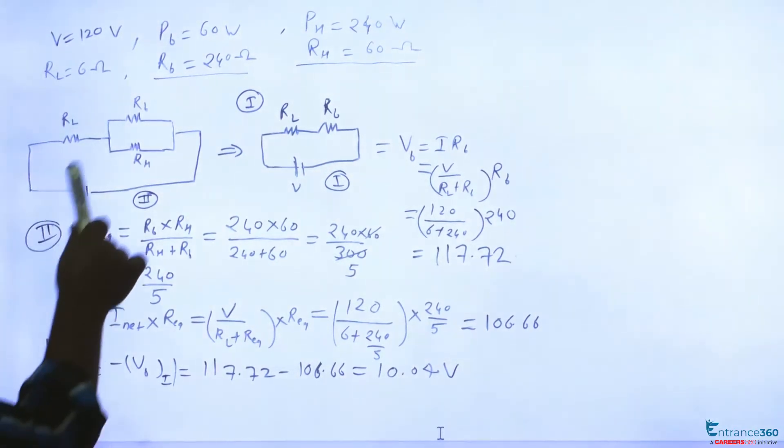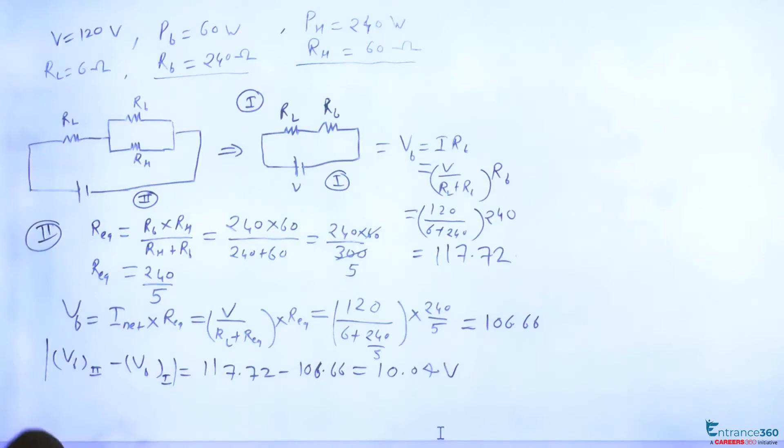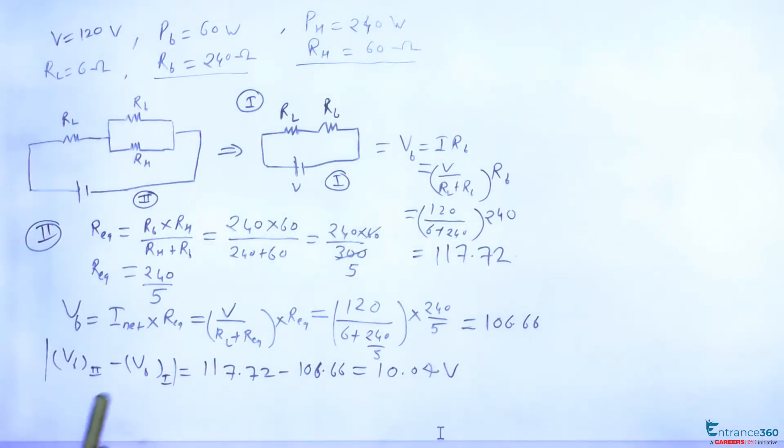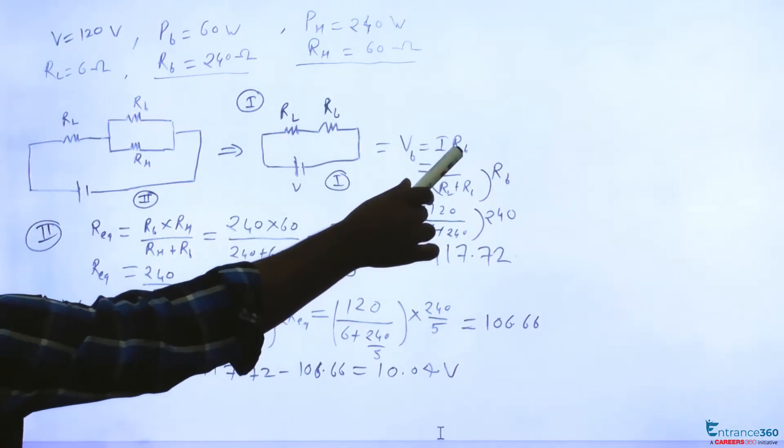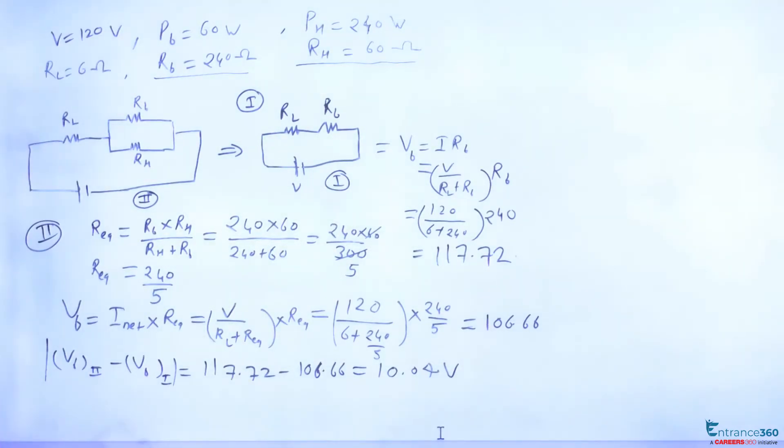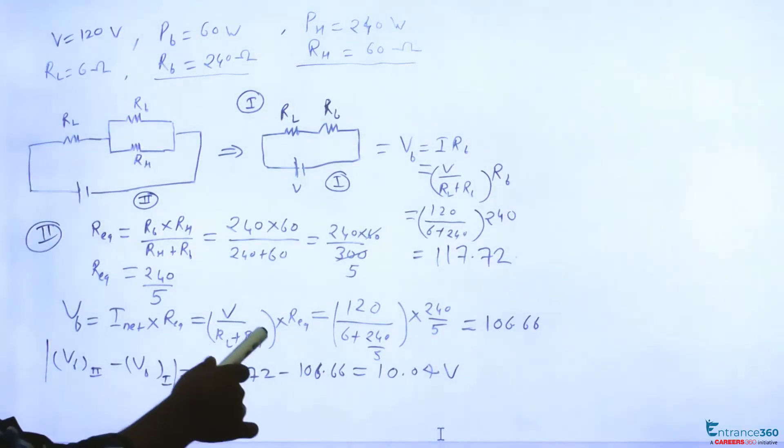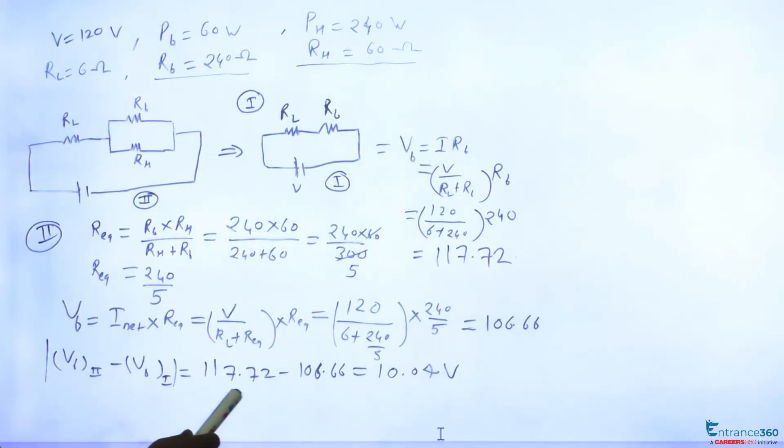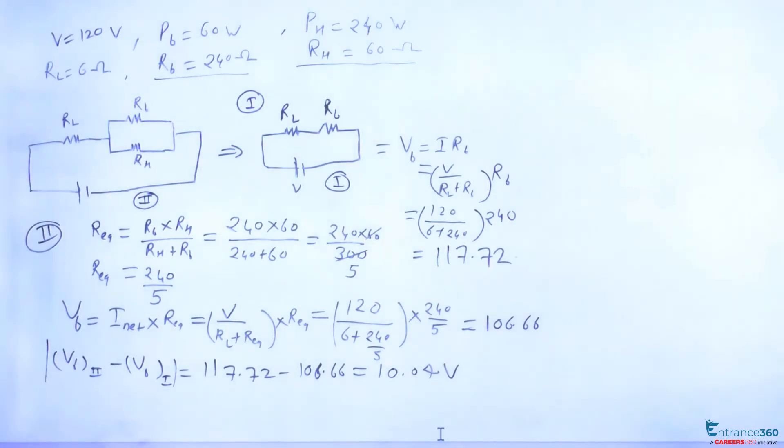So using relation between power and resistance we find out resistance for bulb and resistance for heater, and in both situations we draw figure with respect to the conditions, and then we find out voltage across the bulb using I into RB where I is net current. Similarly in this case we find out voltage across B, which is I net into R equivalent. So after getting these two values of voltage we find the difference between voltage, which we get as 10.04 volt.